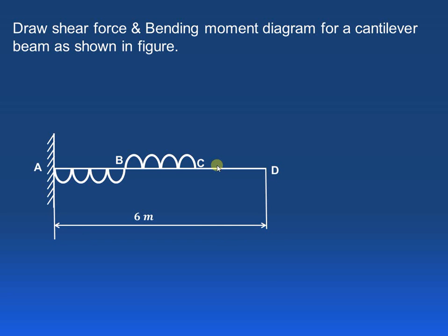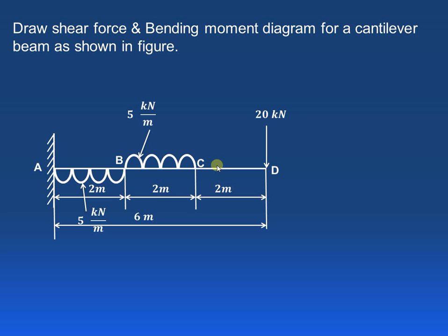The total span length is 6 meters. We have a point load acting at the end, that is point D. Then from B to C, a UDL of 5 kN per meter is acting. Then from A to B, a UDL is acting but from the opposite direction. For this particular arrangement, we have to draw the shear force and bending moment diagram.